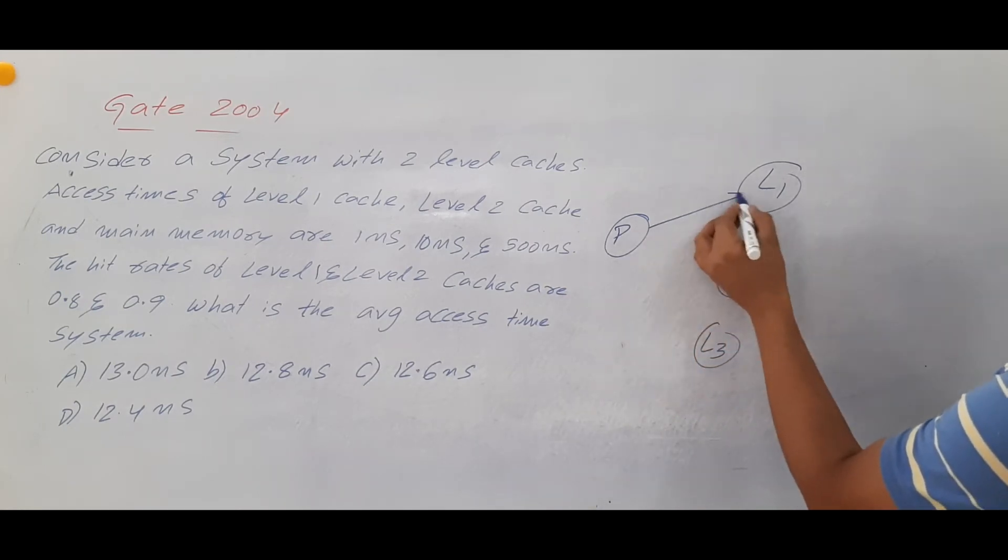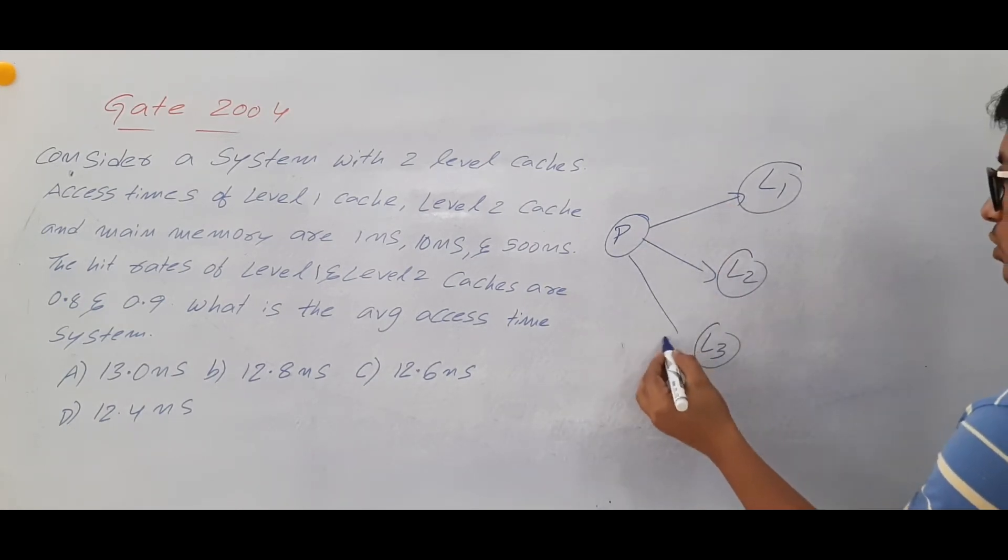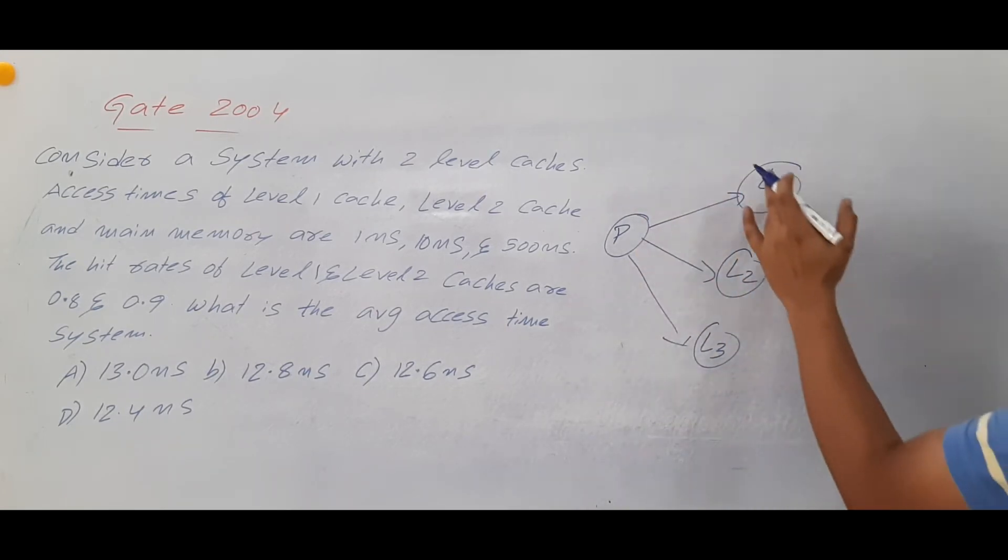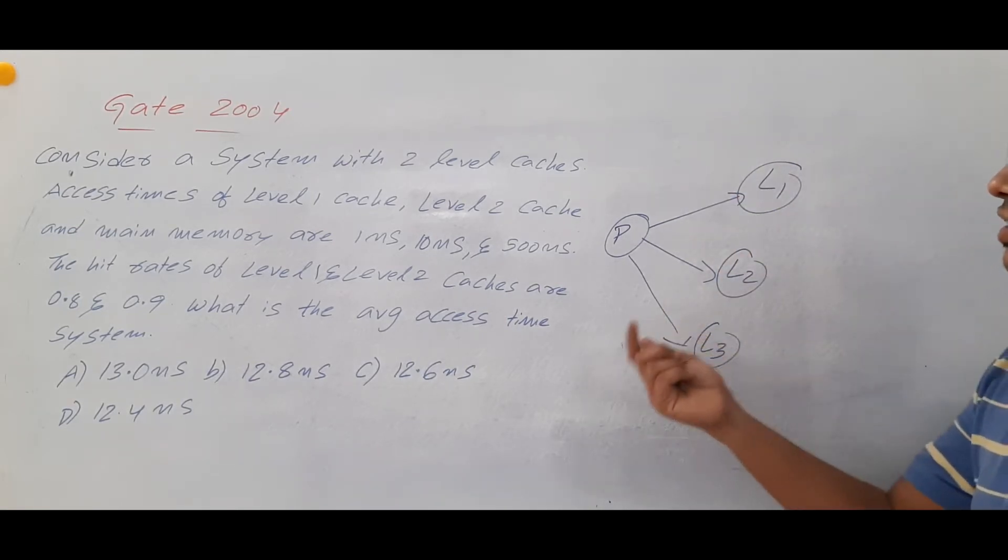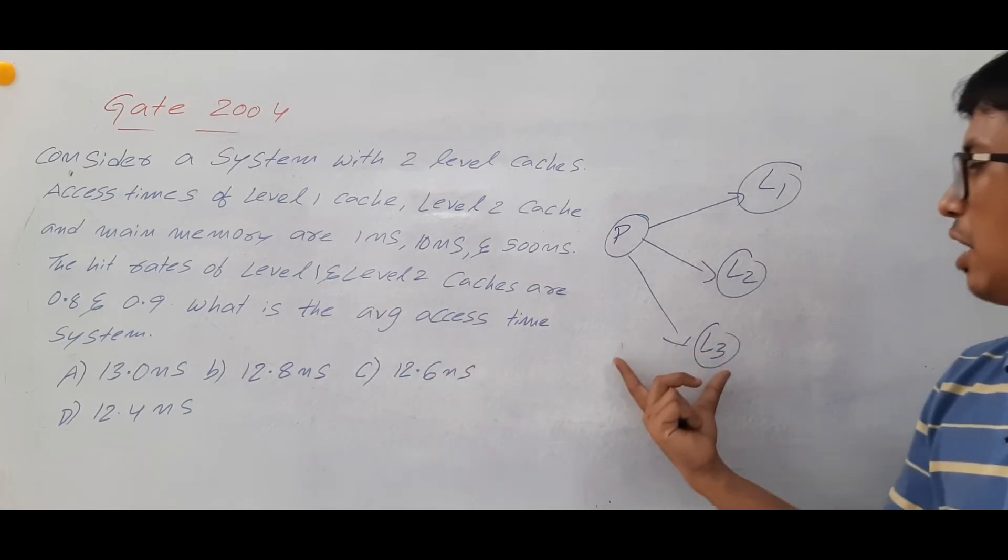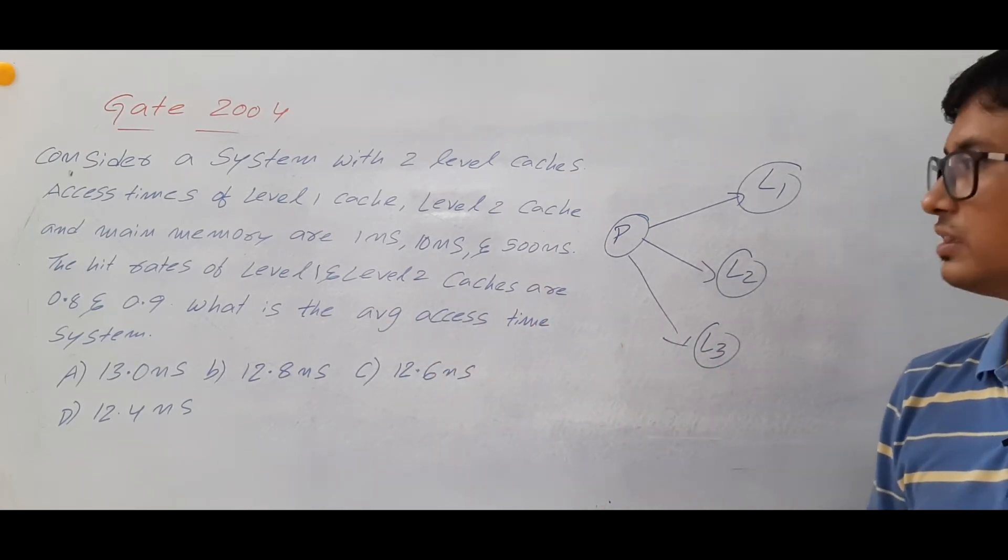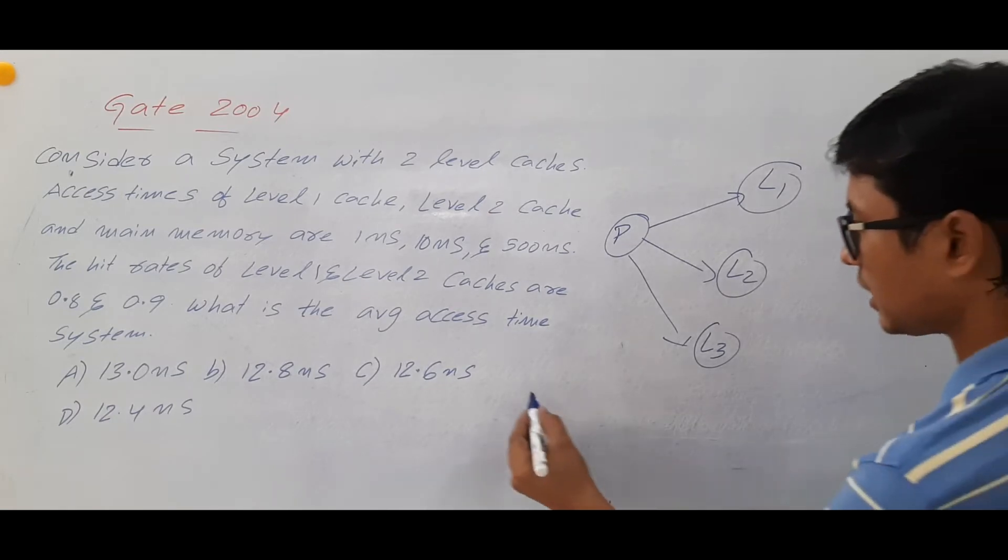And I said that you can access in two ways. You can access all of them simultaneously or first access the processor from processor to L1 then L1 to L2 to L3. So we have discussed these two cases. If it is not given anything you have by default you have to consider like this.